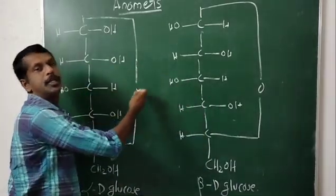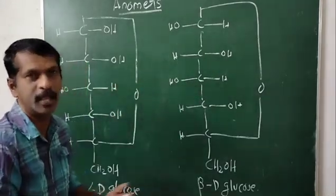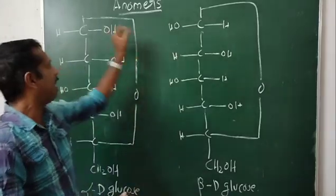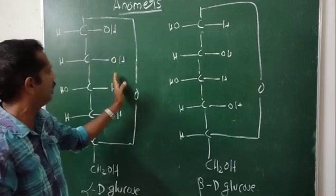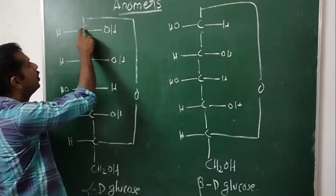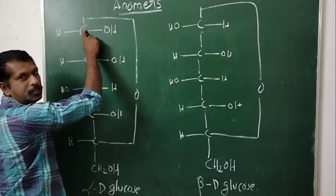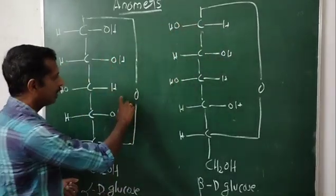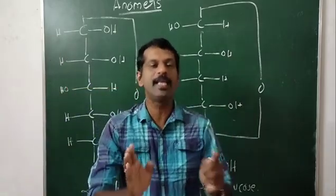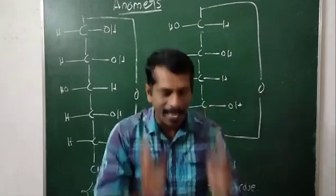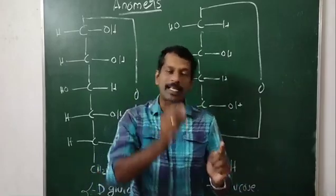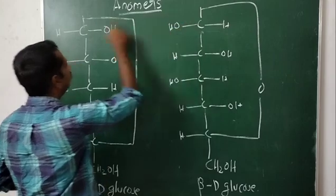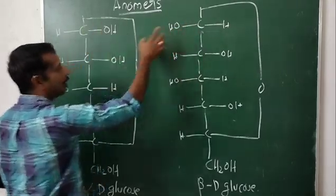What is the difference between these two stereoisomers, or these two diastereomers? We can see that these are diastereomers which differ in configuration only at the newly formed chiral carbon. In the first structure, the OH group is at the right-hand side of the chiral carbon, and in beta-D-glucose, the OH group is at the left-hand side of the chiral carbon.